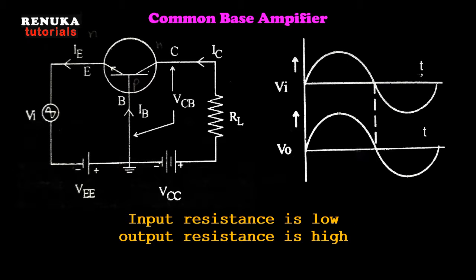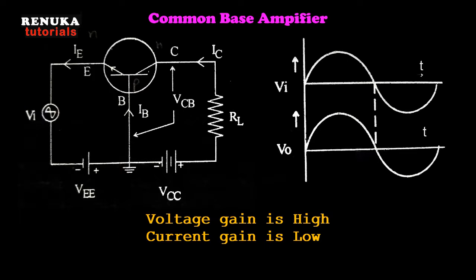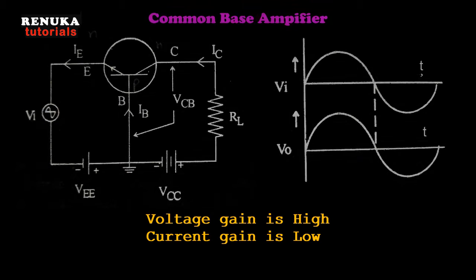In the common base configuration, the input resistance is lowest and the output resistance is very high. The voltage gain is very high, but the current gain is very low and less than 1.